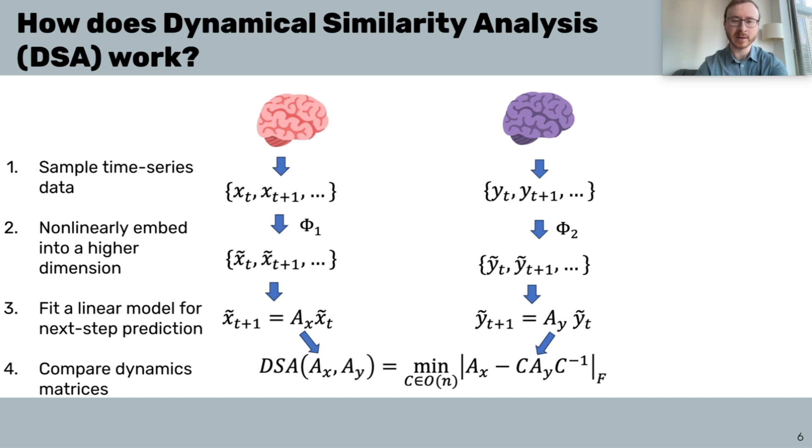So, how does DSA work? It's very straightforward algorithmically. First, we sample time series data from two different systems, which could be brains, artificial neural networks, or anything else you can think of. We embed these to a higher dimension using a nonlinear transform, which is designed to better linearize the systems. And we often use delay embeddings, but other methods like kernels might work as well.